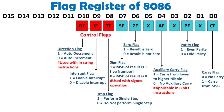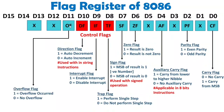These three flags — trap, interrupt, and direction — are control flags, and they were not present in 8085. When we talk about the next flag, that is the overflow flag, present in 8086. During an operation, if overflow occurs, this flag gets set to 1; otherwise it will be 0.